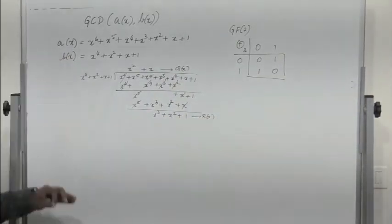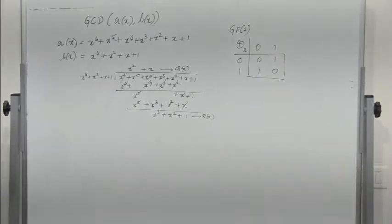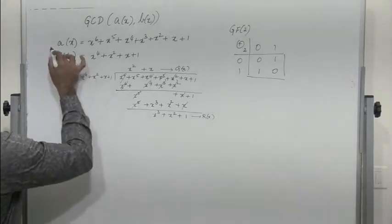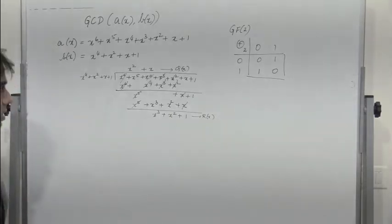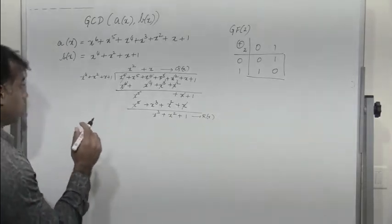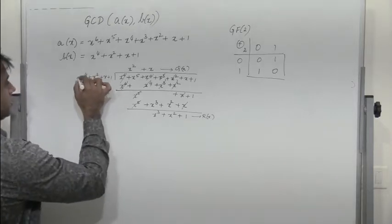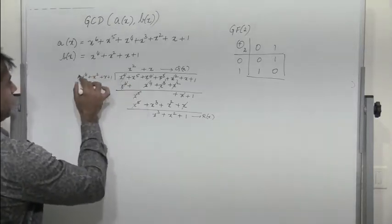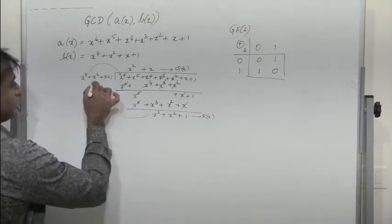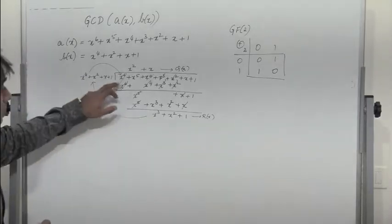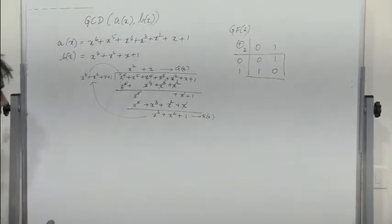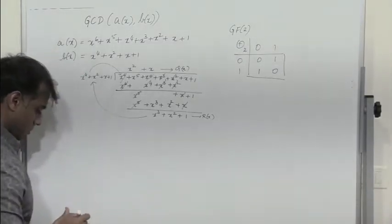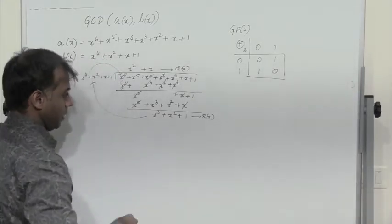Recalling Euclid's algorithm: after the first round, A of x is replaced by B of x, and B of x is replaced by the remainder R of x. So essentially, we will now be dividing B of x by R of x.